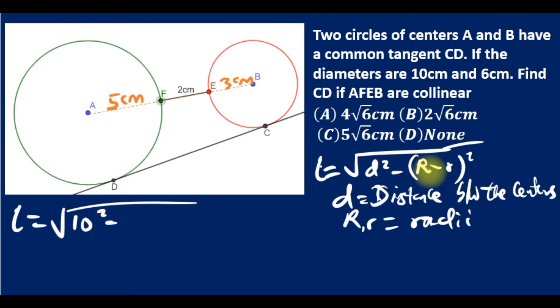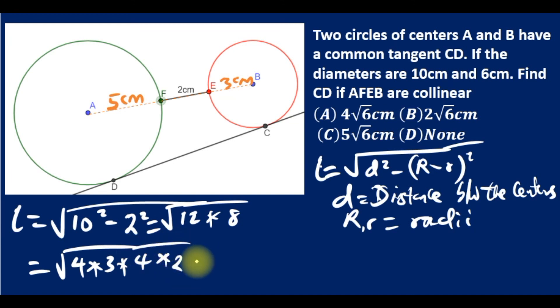So we have square root of—using difference of two squares—10 plus 2 is 12, 10 minus 2 is 8. Now 12 is 4 times 3, and 8 is 4 times 2, so 4 times 4 is 16. Square root of 16 is 4, while 3 times 2 is 6. So our answer is 4√6, option A.